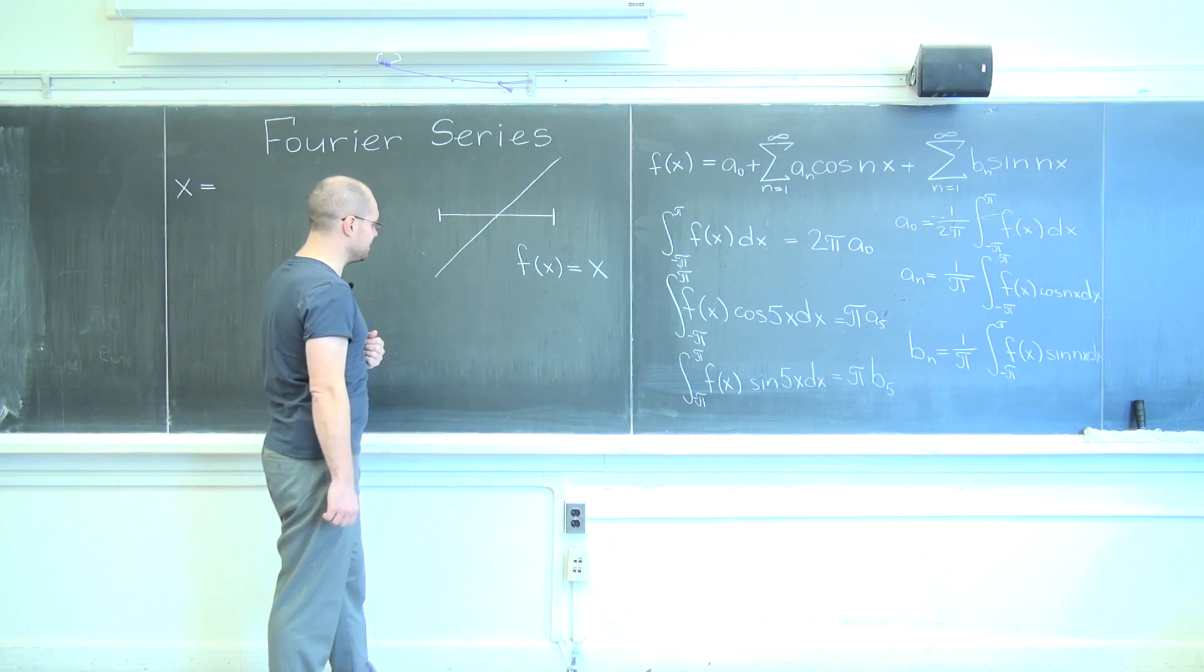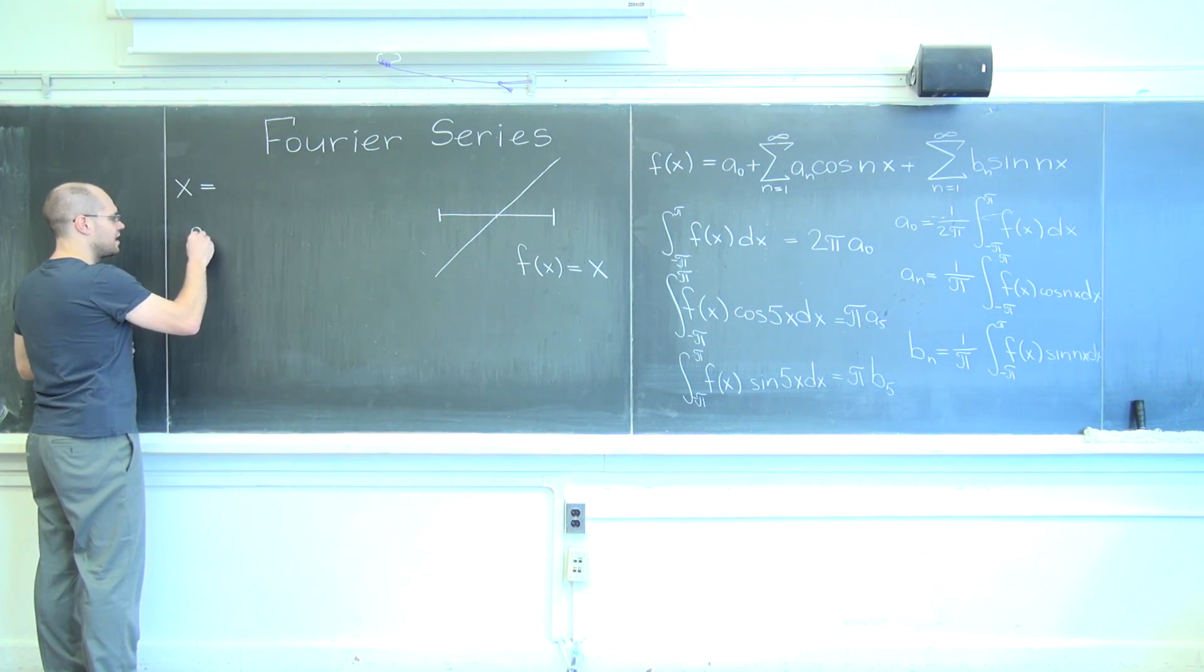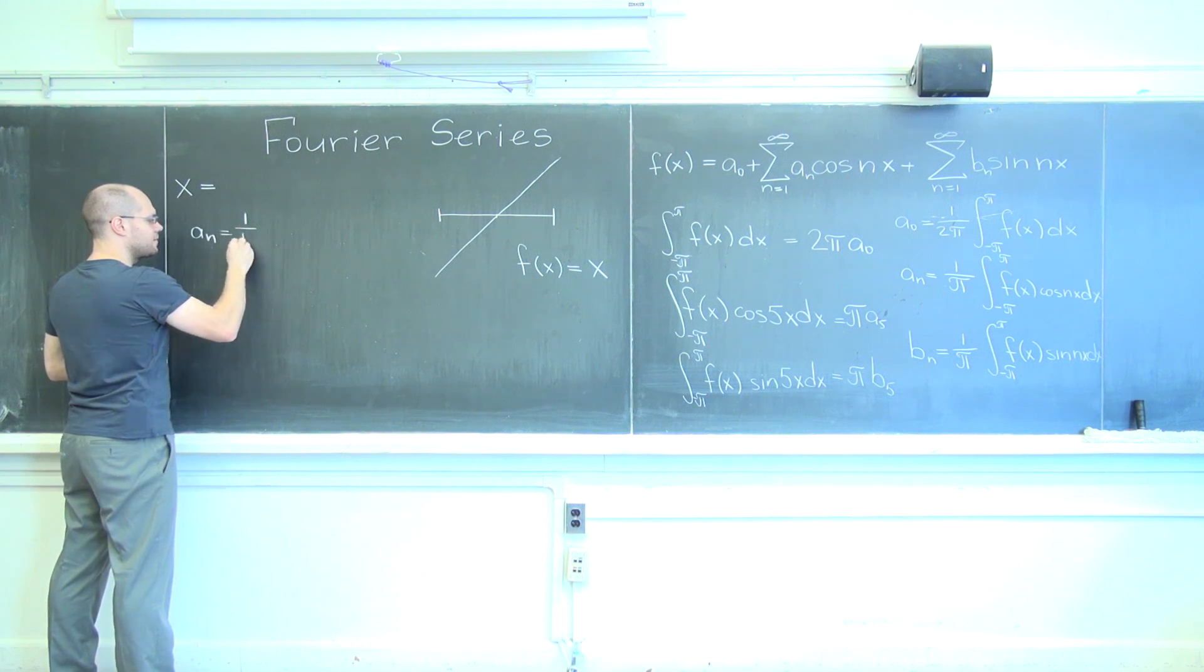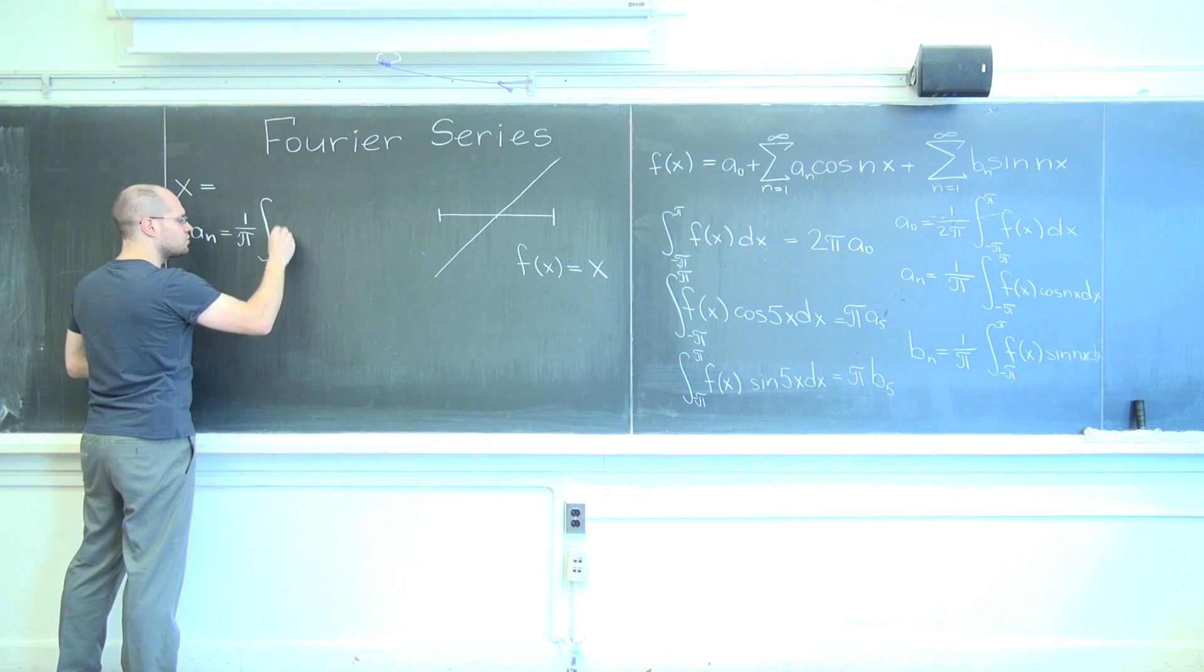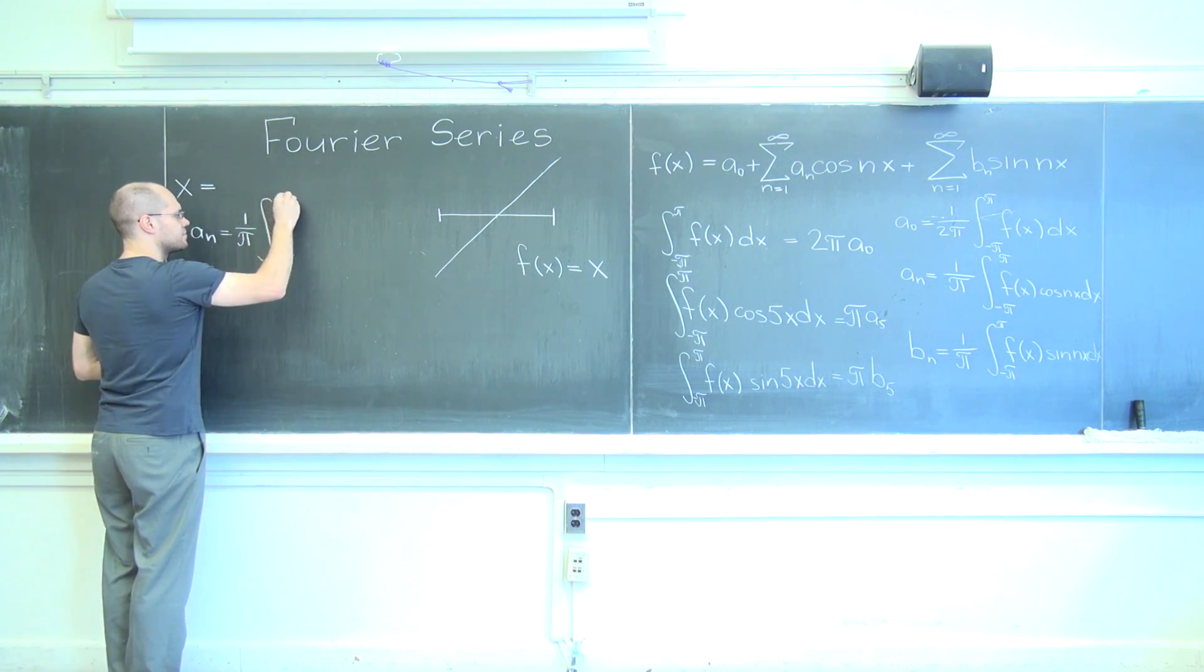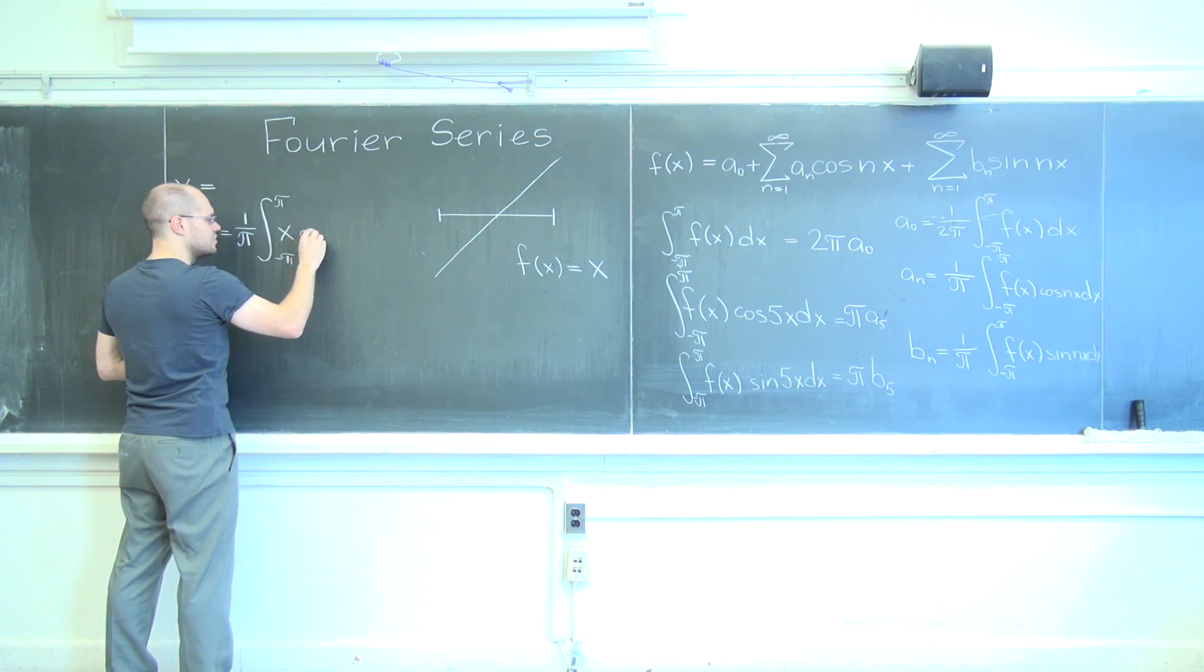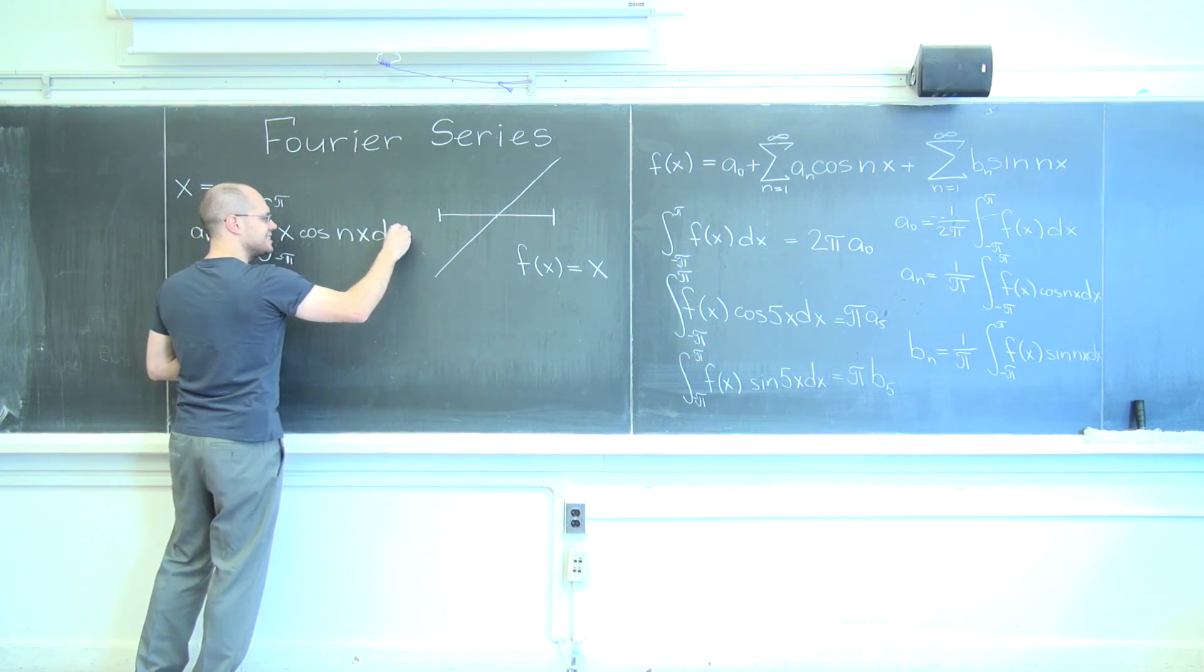Now let's go for a sub n. A sub n is one over pi times the integral from minus pi to pi of x, which is my function, times cosine of n x dx.